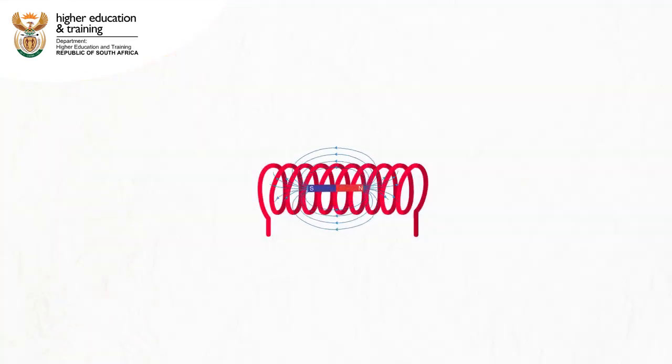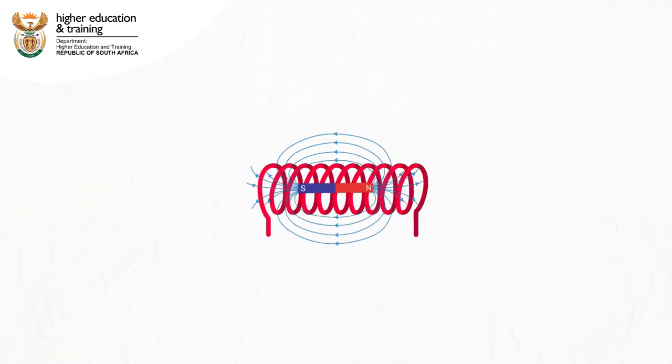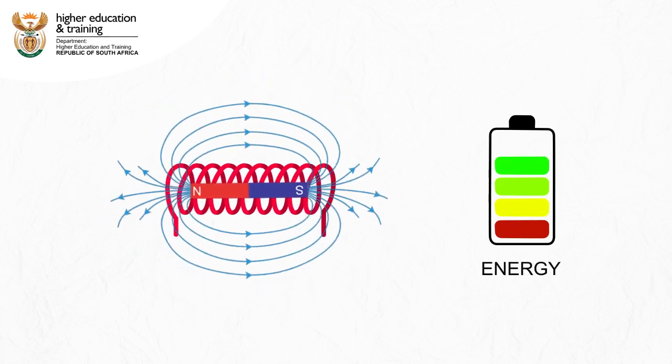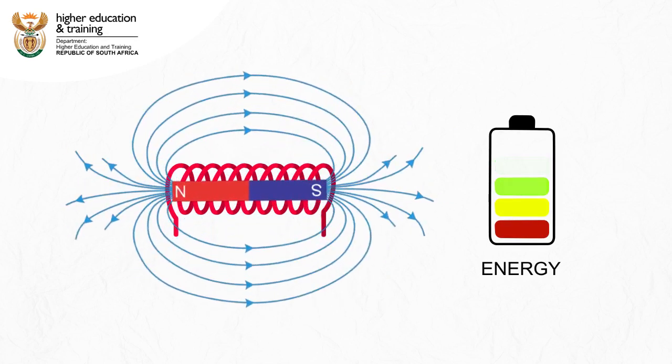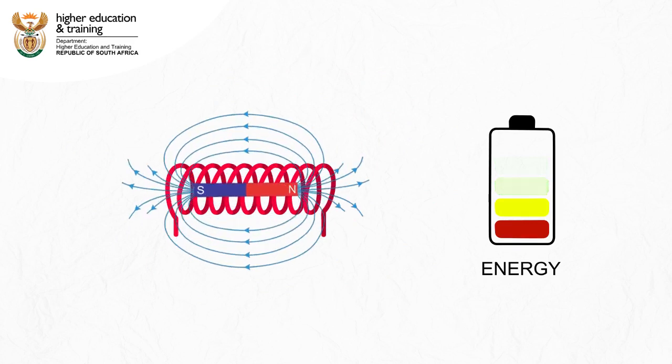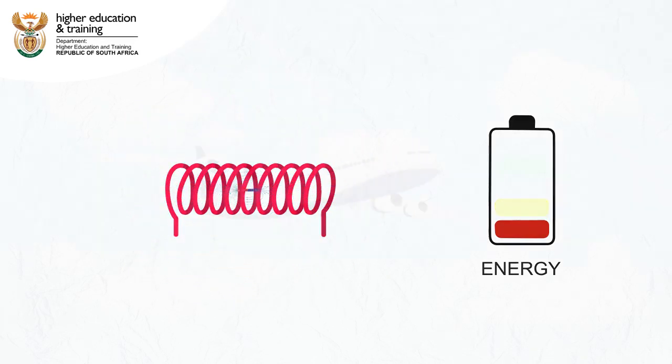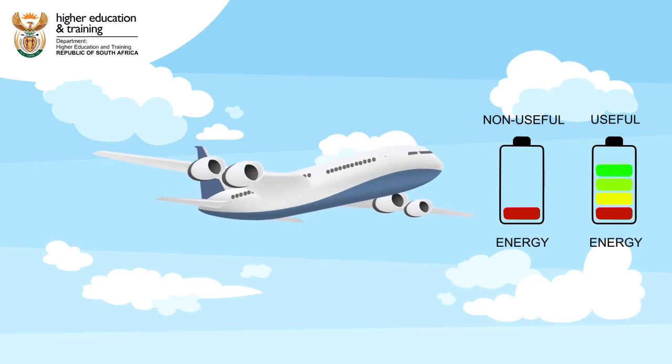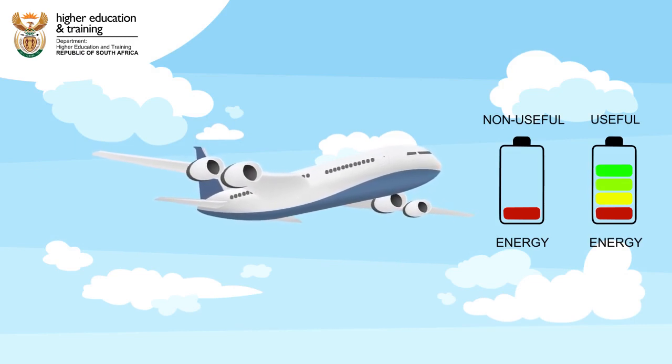Electric motors have coils of wire used to create magnetic fields. It is these magnetic fields that make the motor spin. To make these magnetic fields, however, some of the energy needs to be used. This is like the fuel airplanes must use to move themselves in order to also move the people and the cargo.